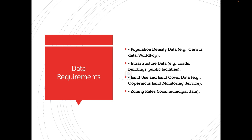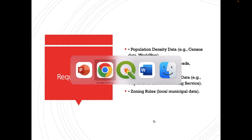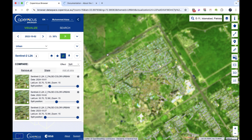The third data layer is land use and land cover, to identify open space suitable for a new park. For this we will use Copernicus Land Monitoring Services, though other data sources can be used as well. We will now move to the Copernicus website. This area on screen is my area of interest, and I will mark the data accordingly.